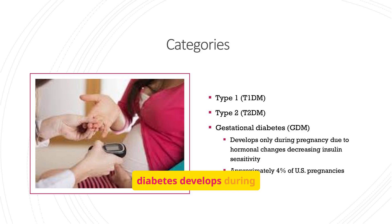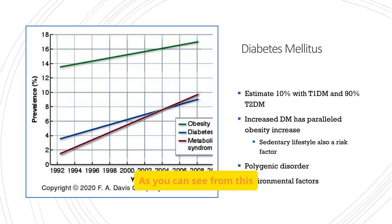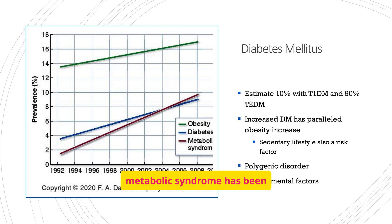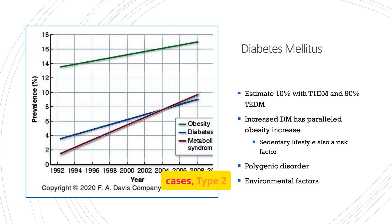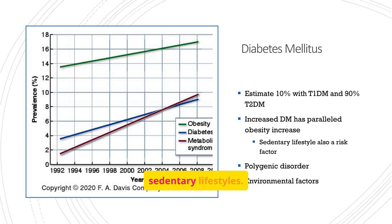Gestational diabetes develops during pregnancy due to hormonal changes that decrease insulin sensitivity. It's important to note that it affects approximately 4% of pregnancies in the U.S. The prevalence of obesity, diabetes, and metabolic syndrome has been steadily increasing. While type 1 accounts for about 10% of cases, type 2 makes up the vast majority at 90%, closely linked to the rise in obesity and sedentary lifestyles.